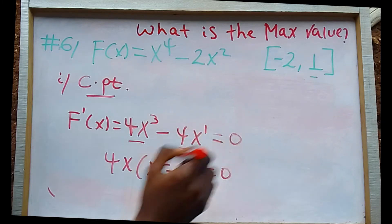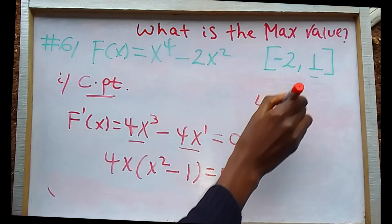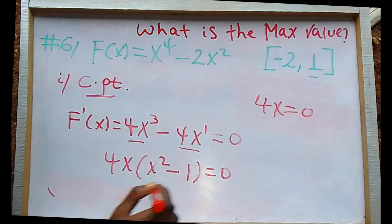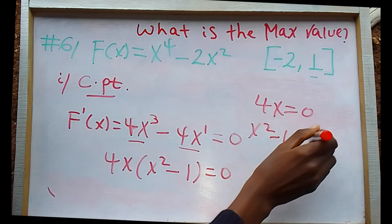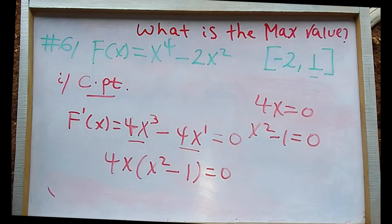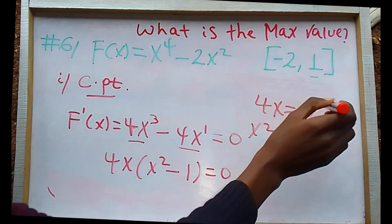This is 4x equals 0, and x squared minus 1 equals 0.